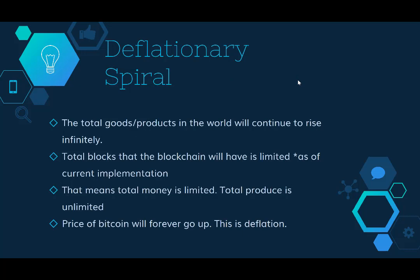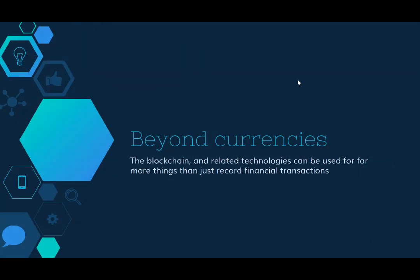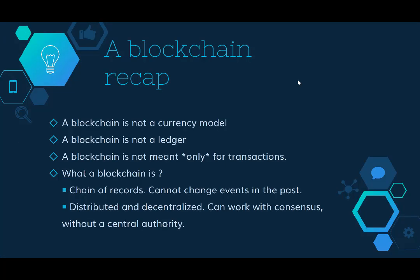There is also the problem of deflationary spiral. The number of Bitcoins that can ever be generated is fixed and limited, which means as the number of products produced in the world increases but Bitcoins do not, Bitcoin becomes deflationary — you'll be able to buy more and more product with the same amount of Bitcoin. We need to understand that blockchain is a very revolutionary piece of technology, and creating Bitcoins is not its only use case. A blockchain is not just a currency model, not just a ledger, and not meant only for transactions.